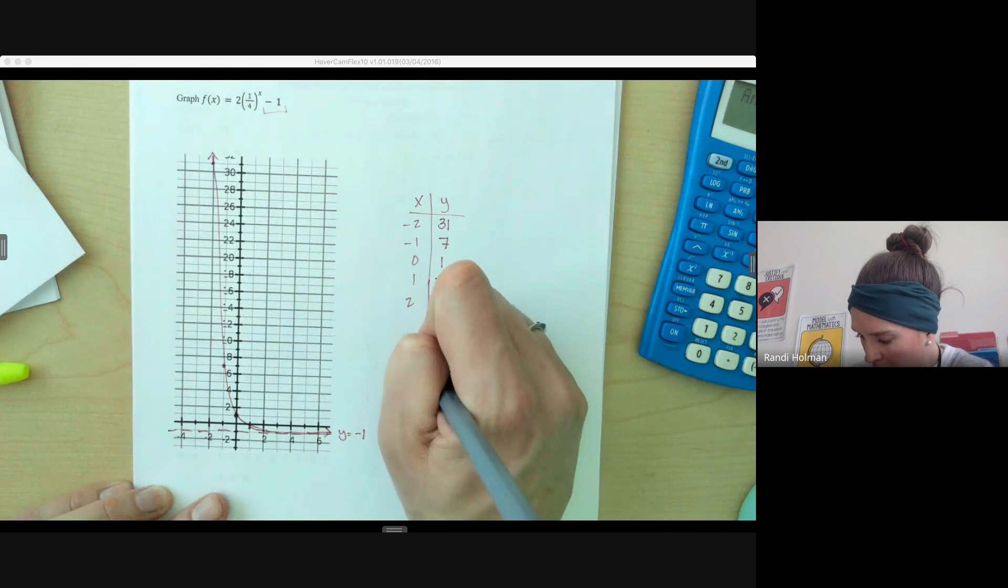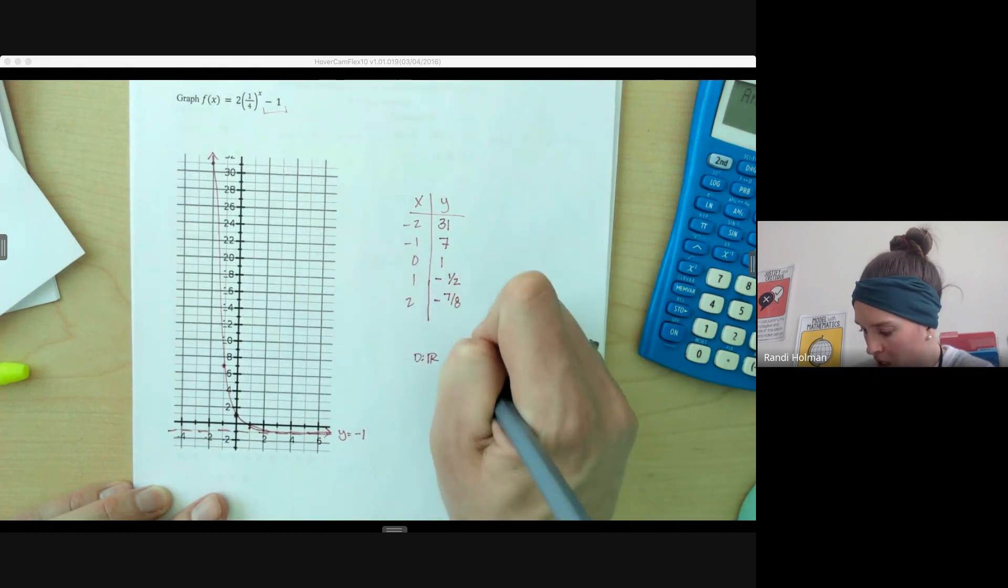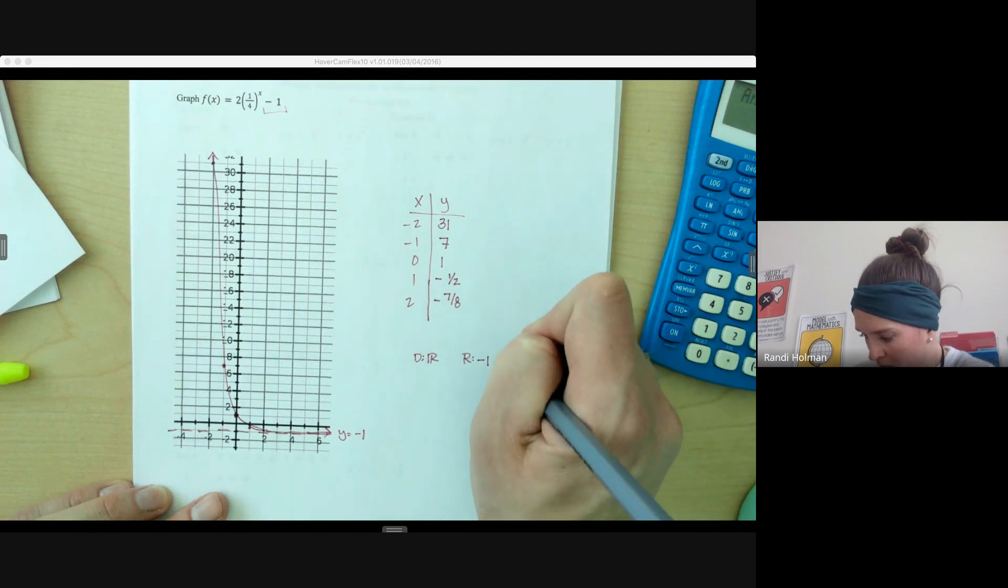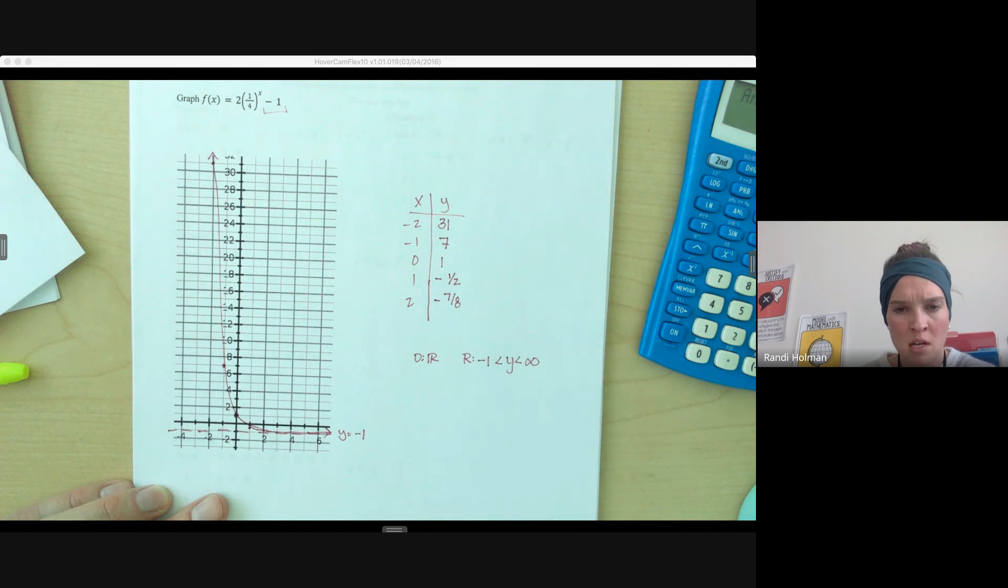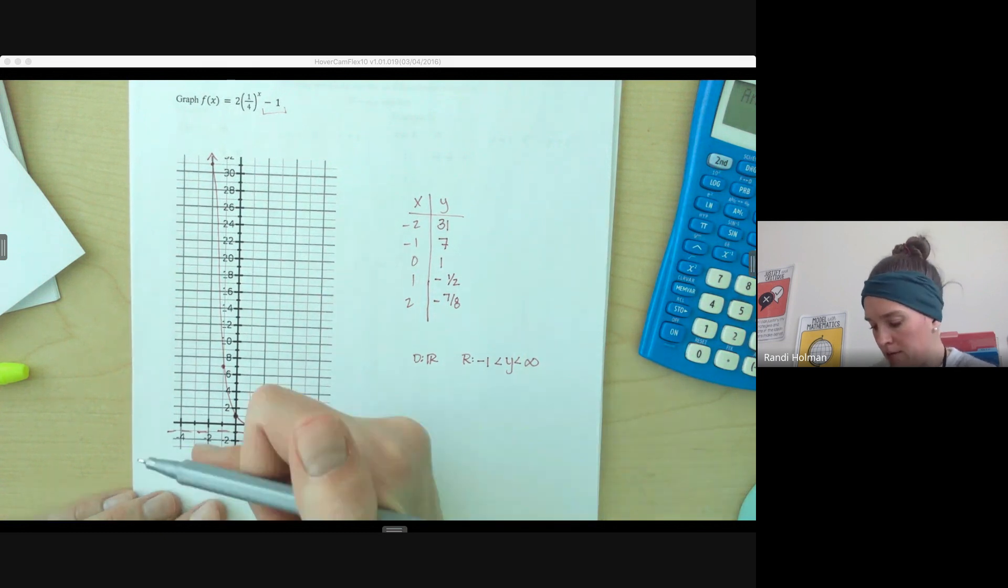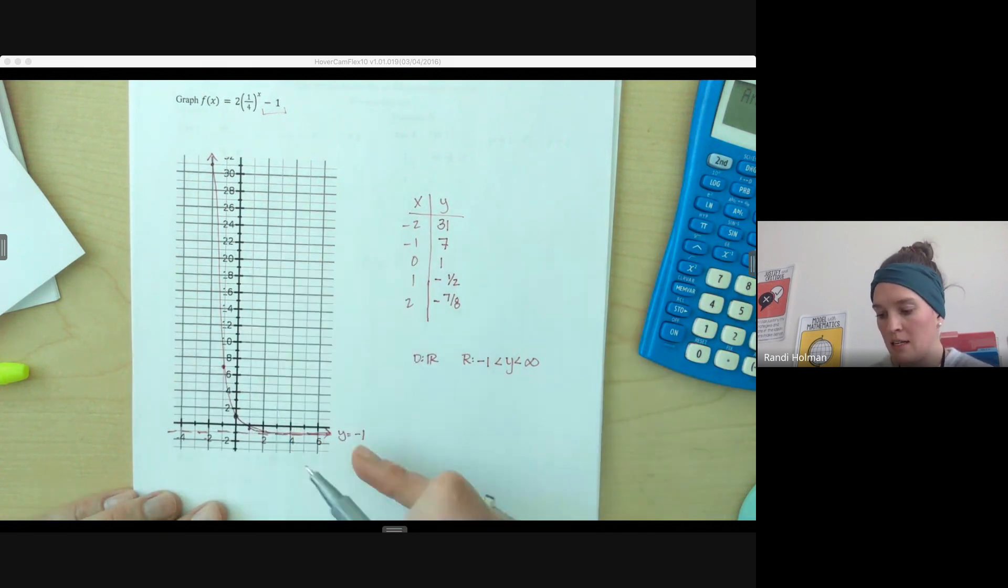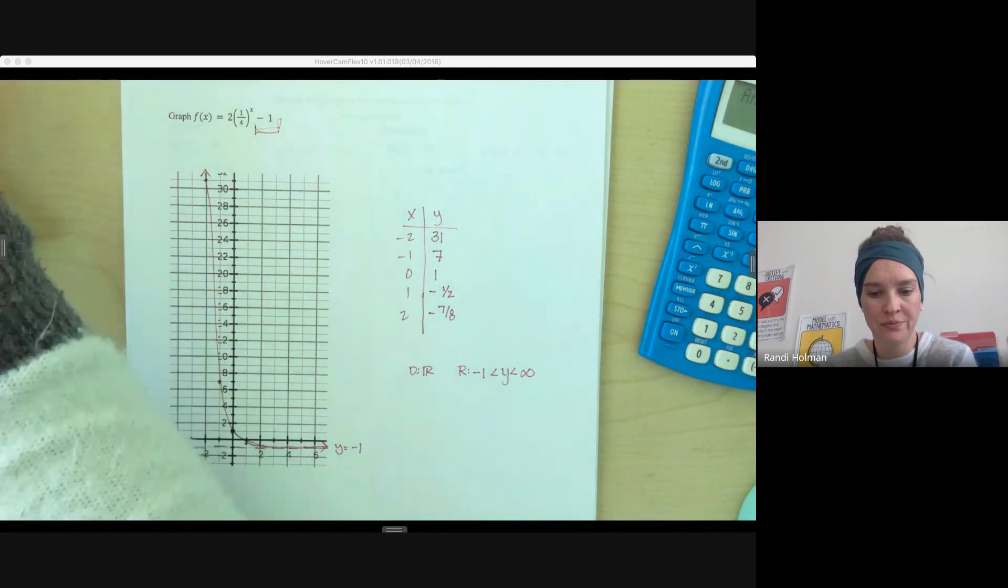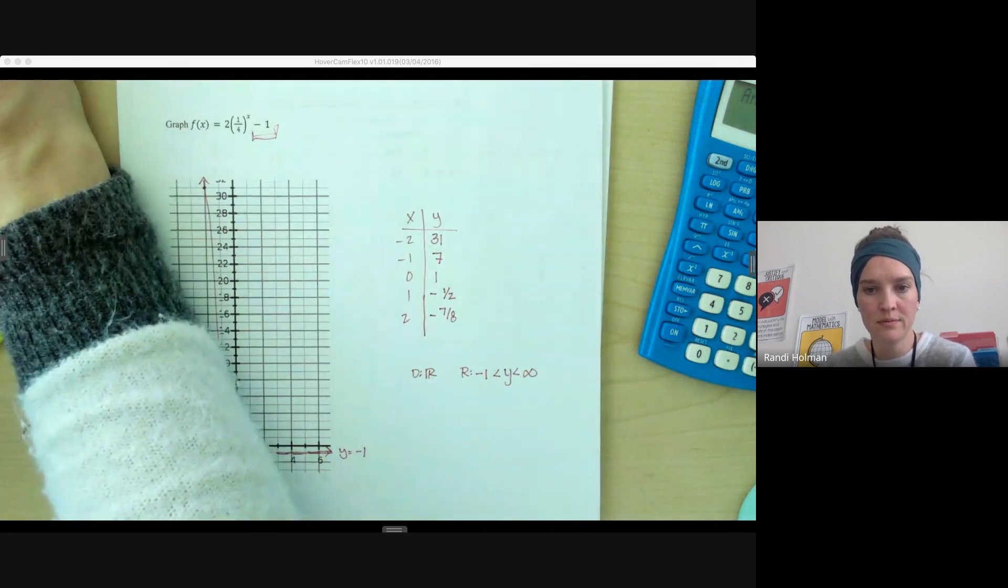So thinking about our domain, still all real numbers. Our range here is from negative 1 up forever. So we're looking at that. Where does it come to? It comes to that negative 1 that comes from the shift right there. That is all I have for you in this video. Thanks so much for watching.